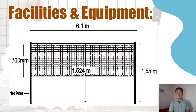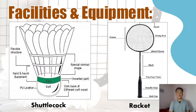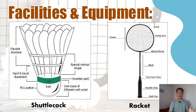The shuttlecock and racket are the main equipment. Here is an illustration of the shuttlecock and the racket with their respective parts. For the racket: the head, the string bed, the heart or throat, the grip, the shaft, the cone, the head grip, and the butt. For the shuttlecock: the flexible structure, hard and touch base, the feather leader, the soft part, and the hard part, as well as the special conical shape and the cork base.